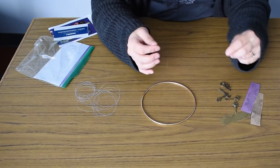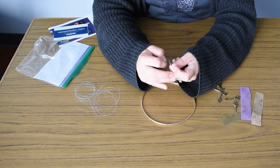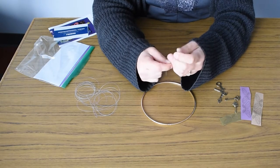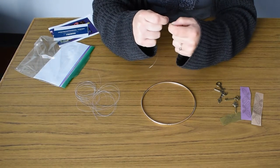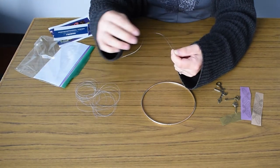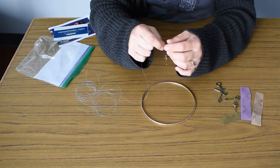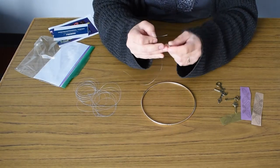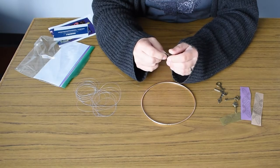And then you are going to take your string, your fishing line, and just put it through the loop on your key. And then you are going to tie it. I told you fishing line is kind of difficult to work with. It works really great in the end, it's just actually working with it.